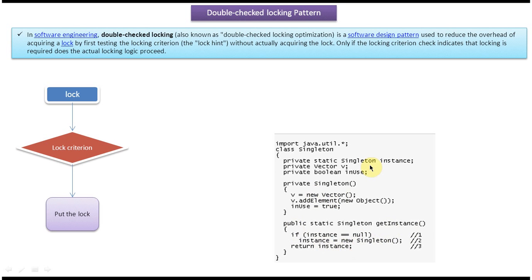This code will work in a single-threaded environment properly — no problem will occur. At any point in time only one instance will be created. The first time a single thread comes in, it checks if instance equals null, finds it is null, creates the object, and returns the instance. For subsequent calls the instance will not be null because we already assigned it, so it returns the same instance that was created the first time.